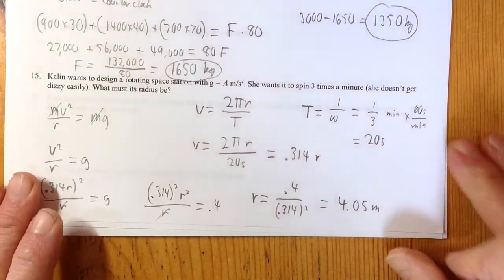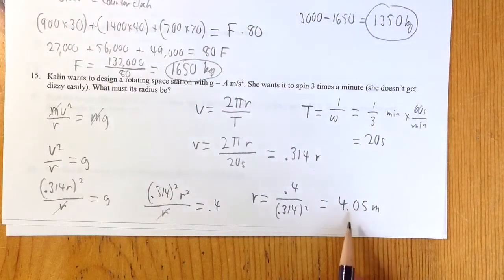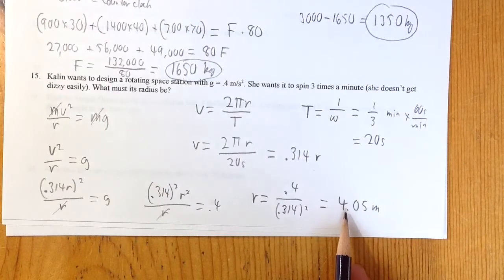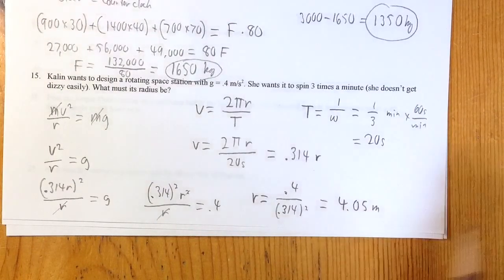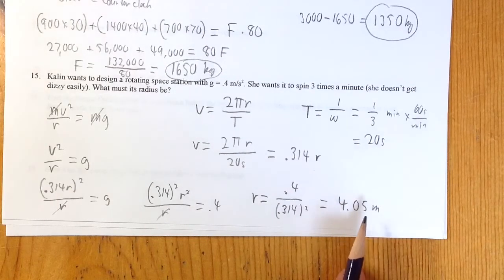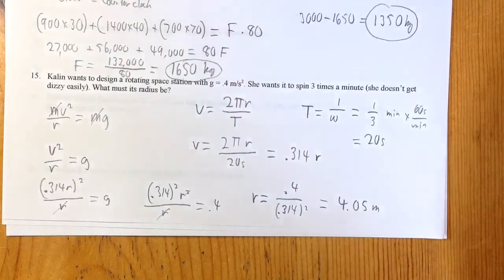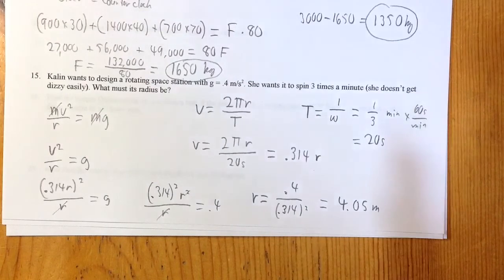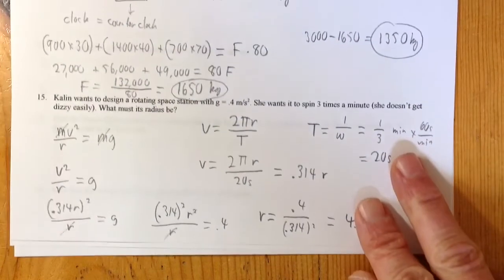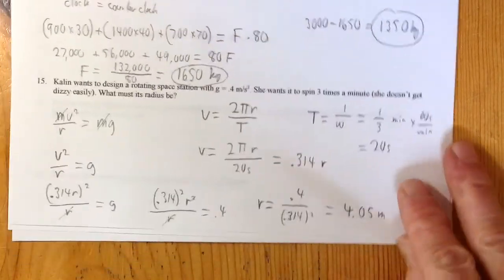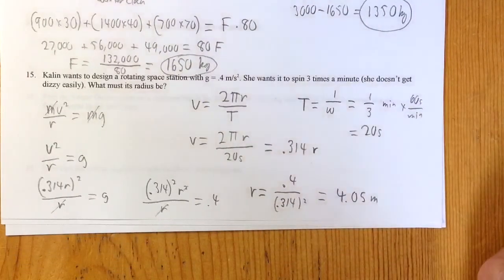Her space station needs a radius of about 4.05 meters. A typical person is around 2 meters tall, so that's a reasonable size — way taller than your head. If you want to spin only 3 times a minute and have a little bit of gravity, 4 meters works. The faster you spin, the more gravity you'll have. Hopefully these all made sense — let me know if you're having any trouble, and thanks for listening.